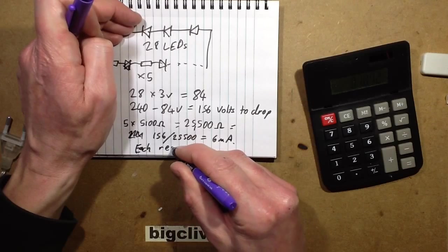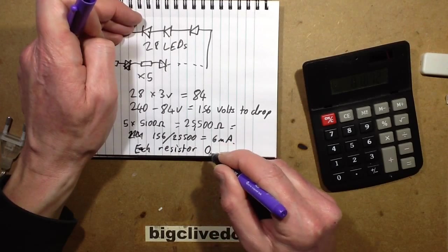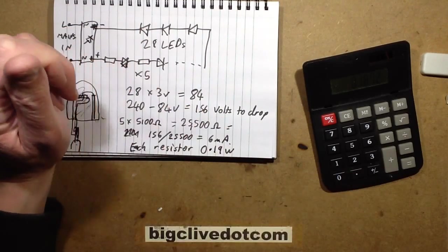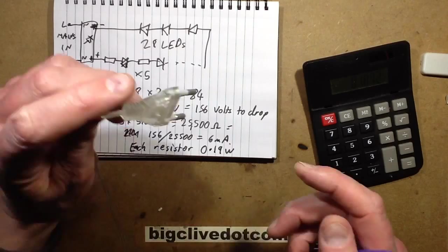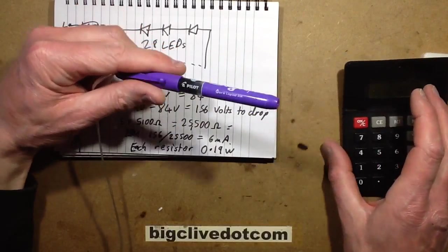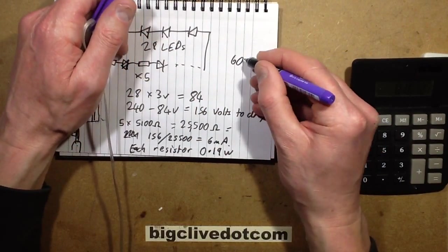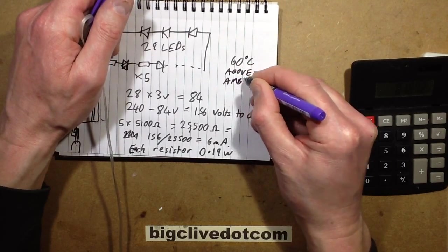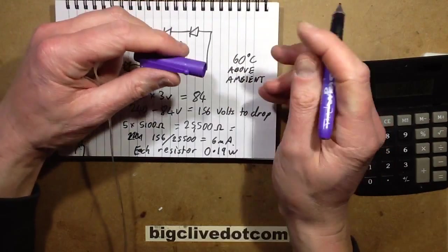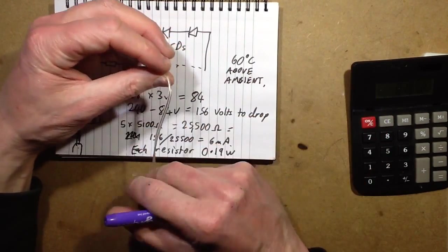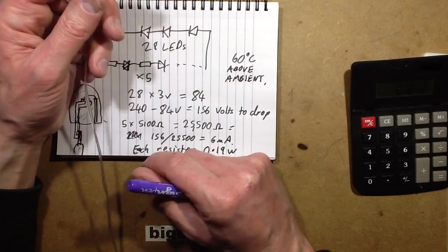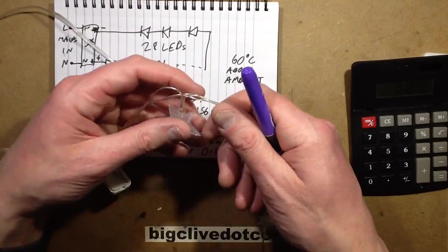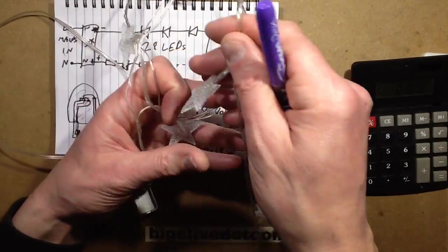0.19 watts. And those little resistors are kind of like, they look like the eighth watt resistors. They're tiny. So they're being pushed quite hard. And I measured the temperature of the resistors as 60 degrees centigrade above ambient. So they're going to get pretty warm. In a typical room temperature, say 20 to 30 degrees, it's going to be 80 to 90 degrees Celsius that those resistors are going to be running at. And this seems to be quite common, that they sort of rate the resistors quite low.